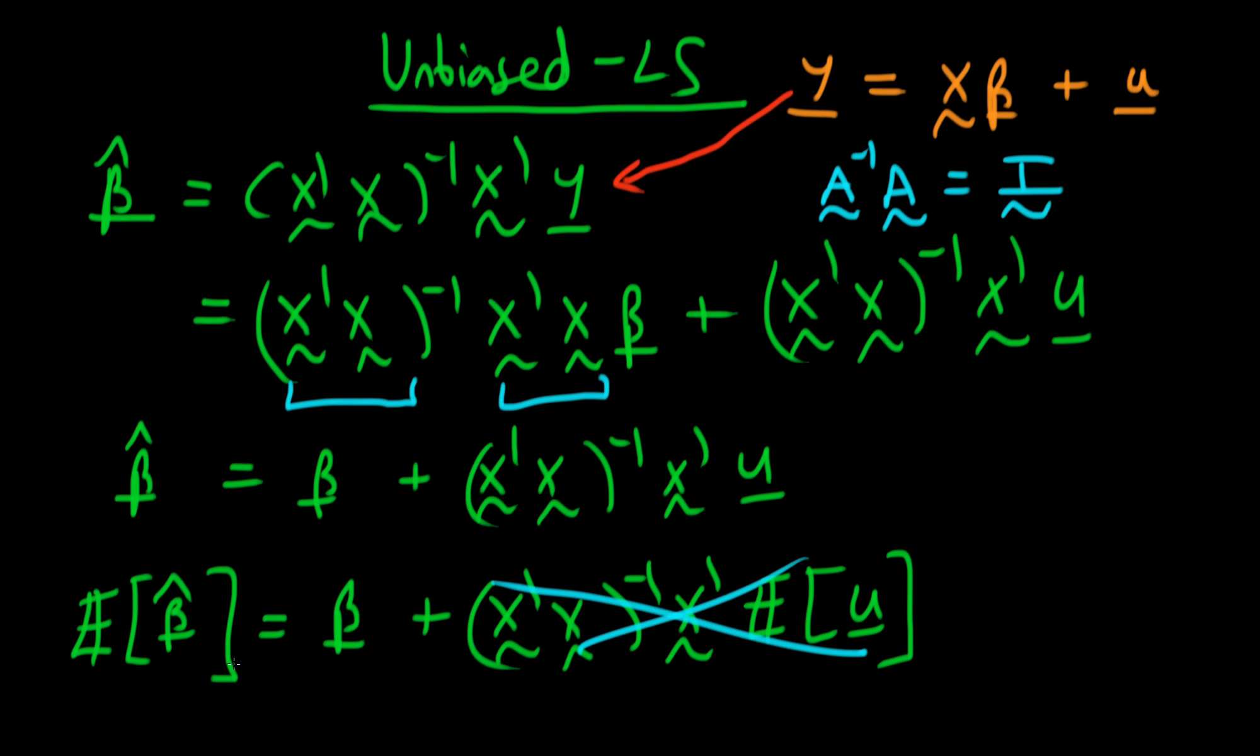So what does that say? Well that says if I take repeated samples from my population and I apply my least squared estimator to each of those samples then on average my least squared estimator gets it right. It gets our true population parameter beta.